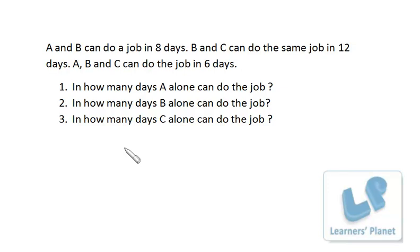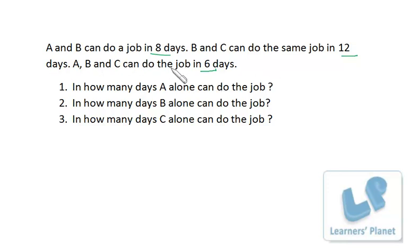A and B can do a job in 8 days. B and C can do the same job in 12 days. A, B, and C can do the job in 6 days. So we are aware of three facts: A and B's combined capacity, B and C's combined capacity, and A, B, and C's combined capacity.